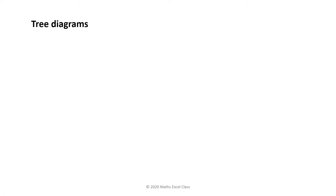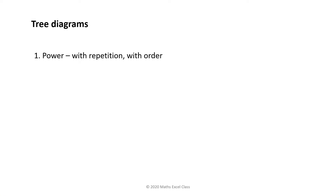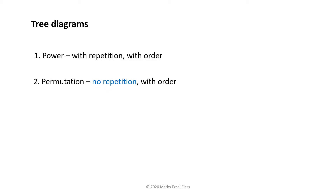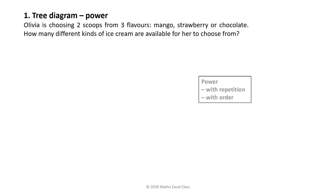Let's look at three diagrams on power, permutation, and combination. In power, we can have repetition and order.